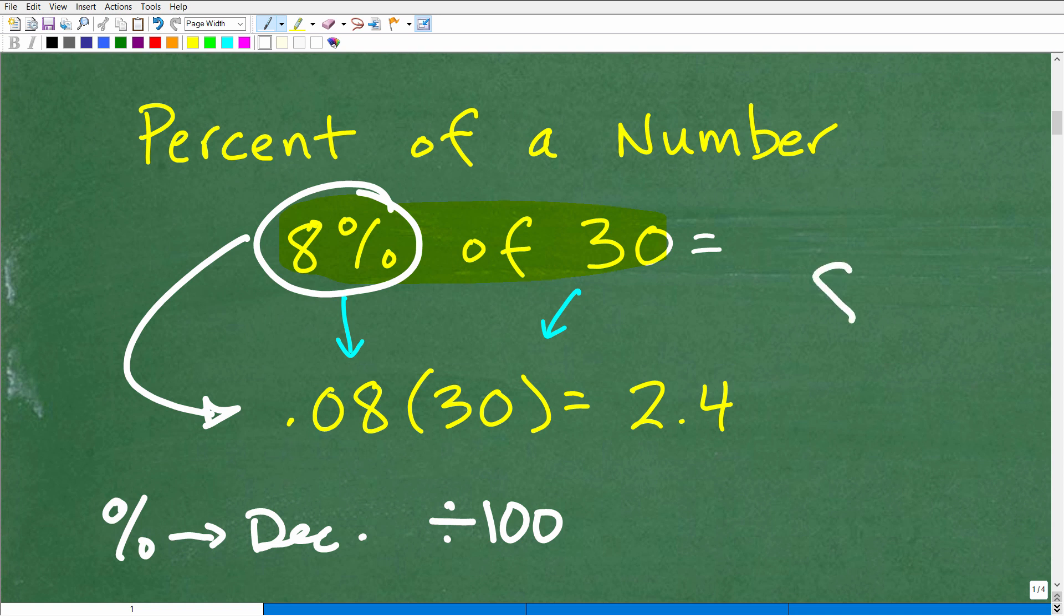Now, another way you can think about doing this is let's write 8%. So 8% is the same thing as 8.0%. I'm only writing it this way so we can clearly identify where the decimal point's at. So we have 8.0%. So when you divide by 100, what happens is the decimal point gets moved over two places to the left. So here would be 0.08.